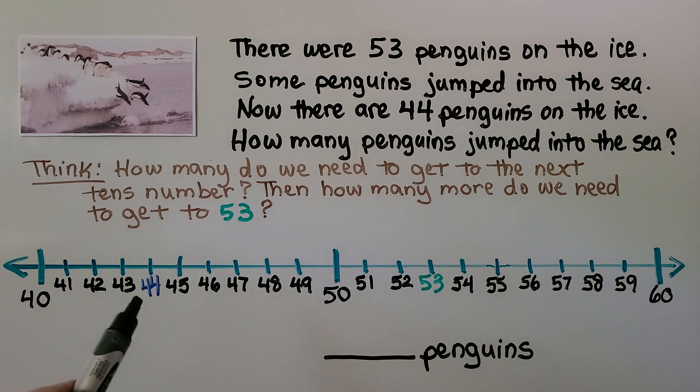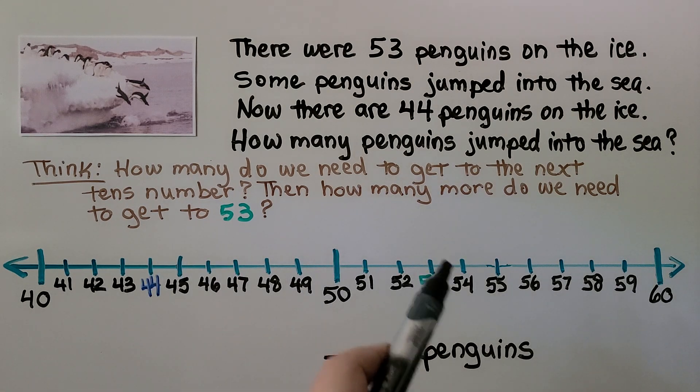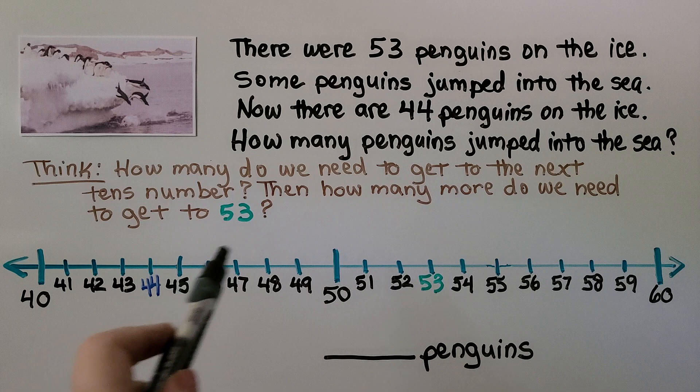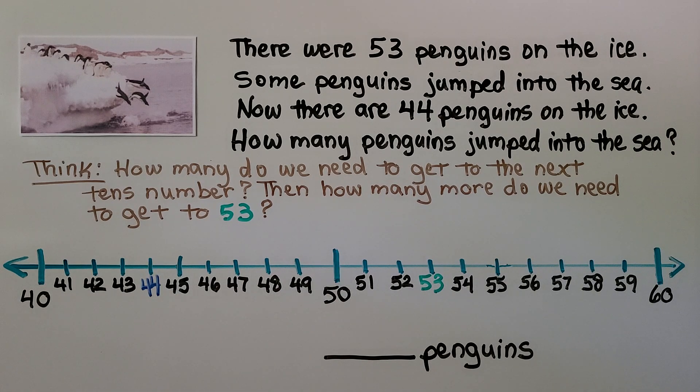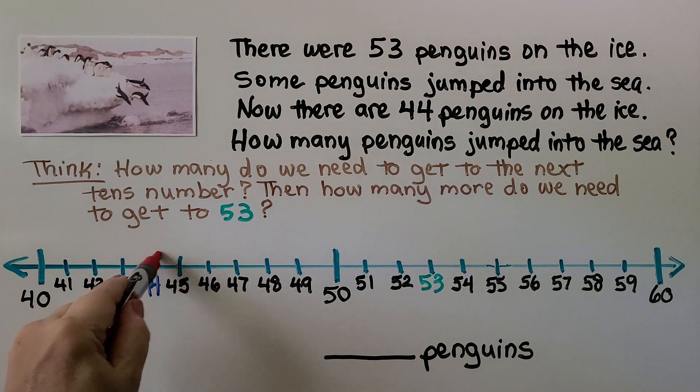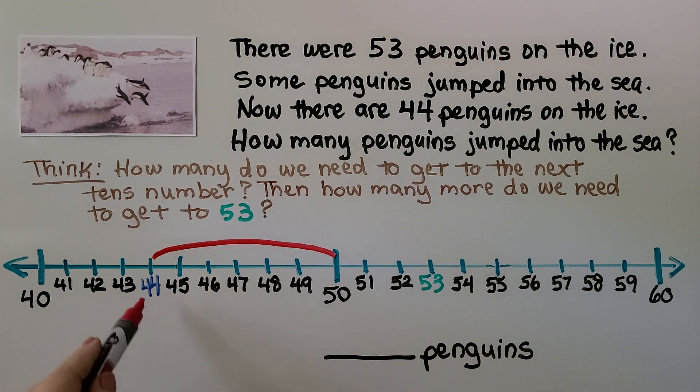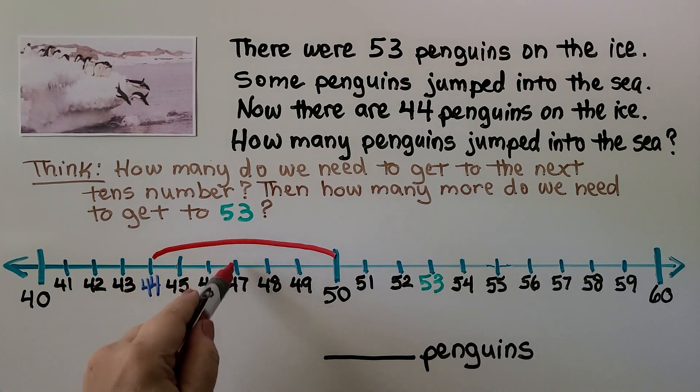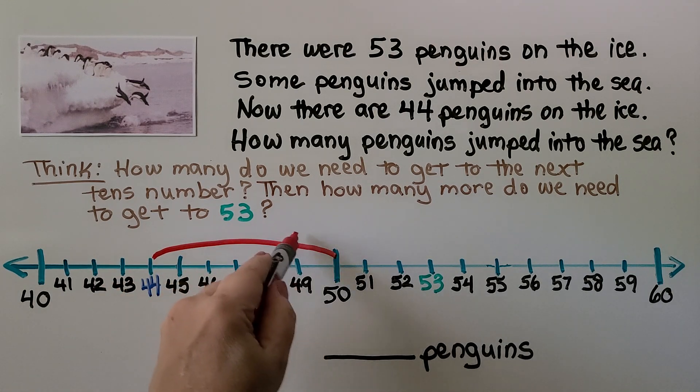We have a 44 and we need to get to 53. So first we jump to the next tens number, 50. We jumped 1, 2, 3, 4, 5, 6.